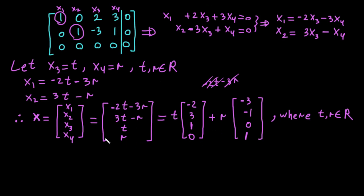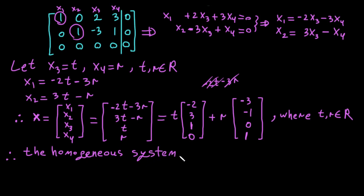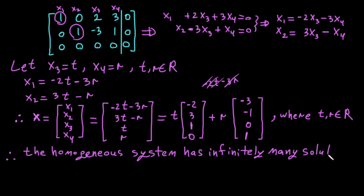Since we have free variables T and R ranging over all real numbers — for example, setting T = 1 and R = 5 gives one solution, and any other values give another — this homogeneous system has infinitely many solutions. That's it, see you in the next video.